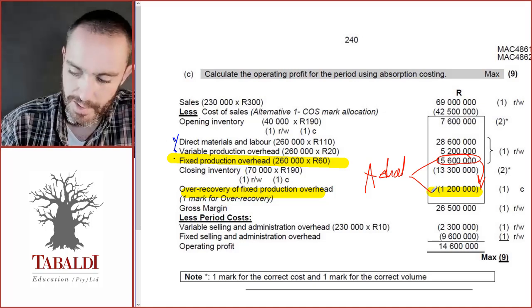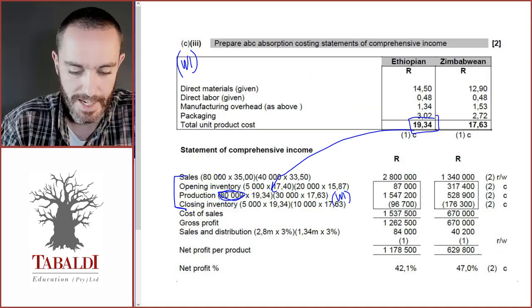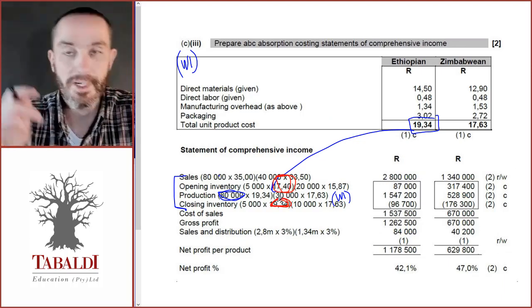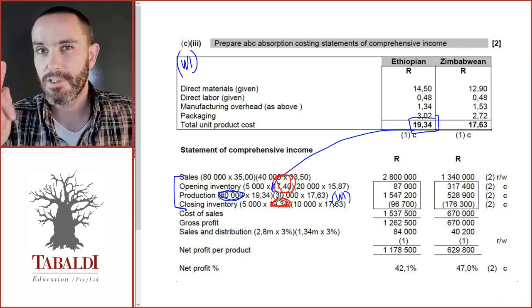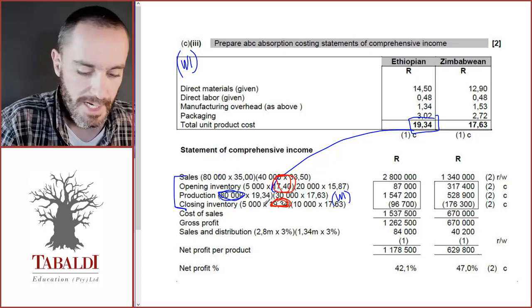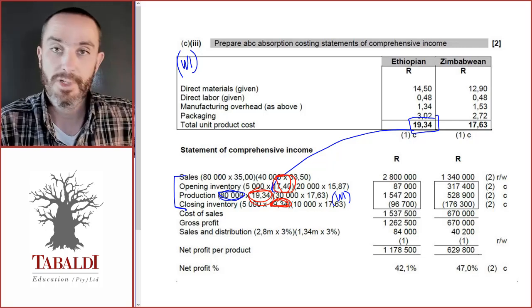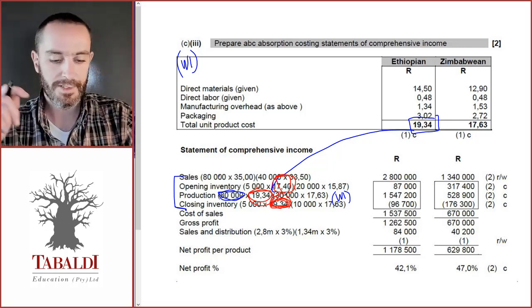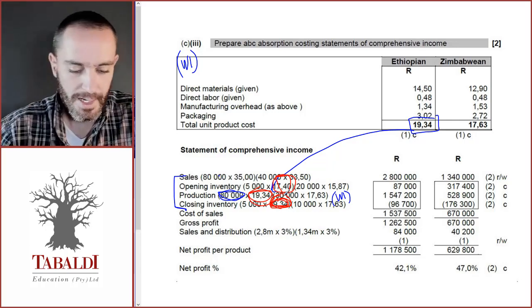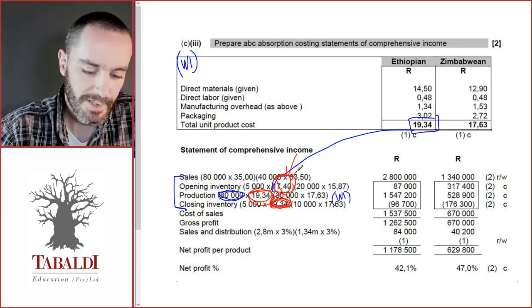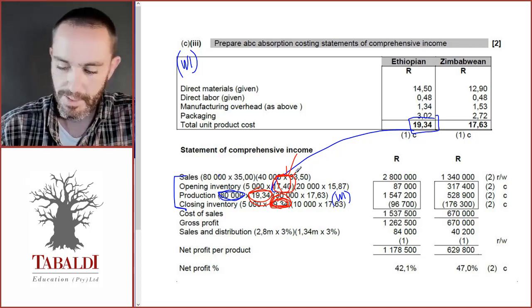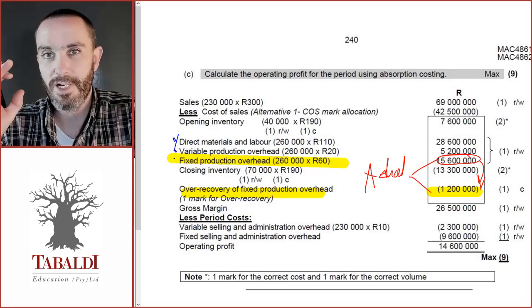Going back to the previous example, it's important to show how opening and closing inventory can differ, and this is where first-in first-out versus weighted average matters. The current year production cost per unit is the same as the closing inventory cost, which indicates first-in first-out. The opening inventory is different because it came from the prior year and there may have been price increases. Make sure you read the information carefully.